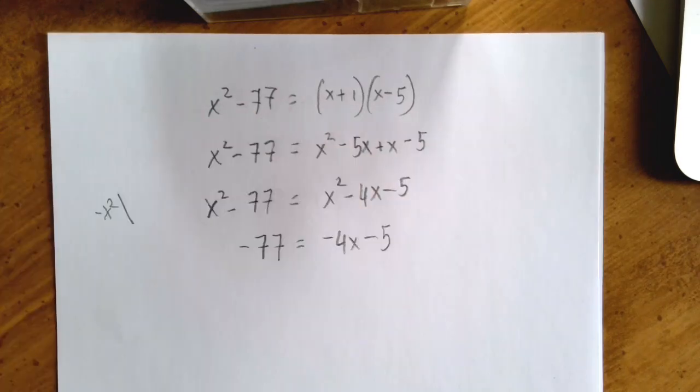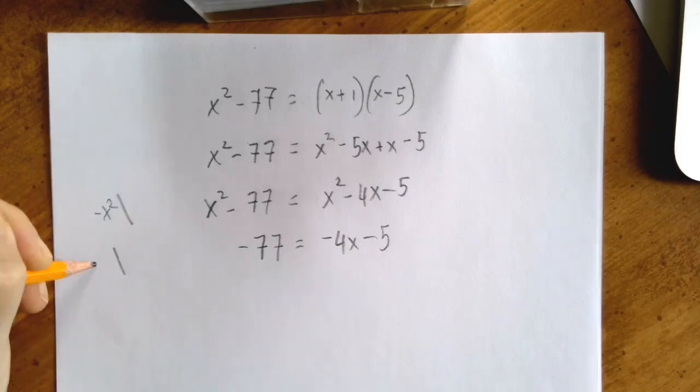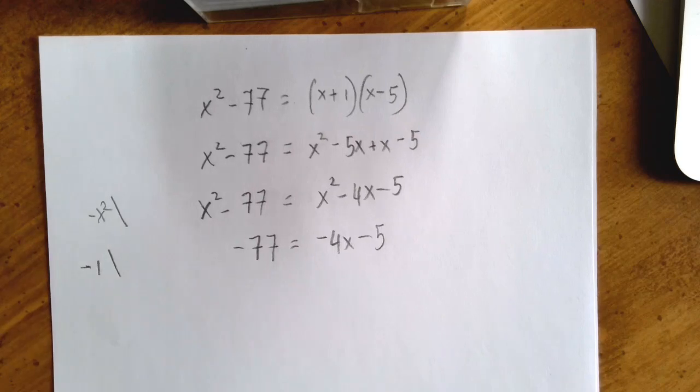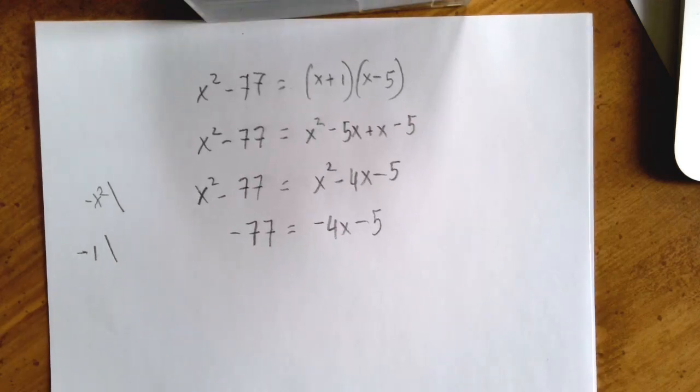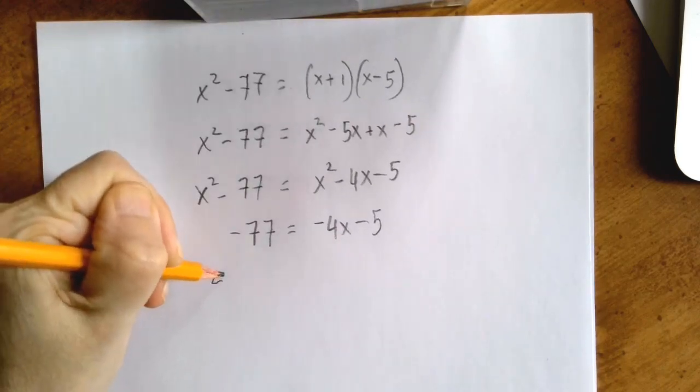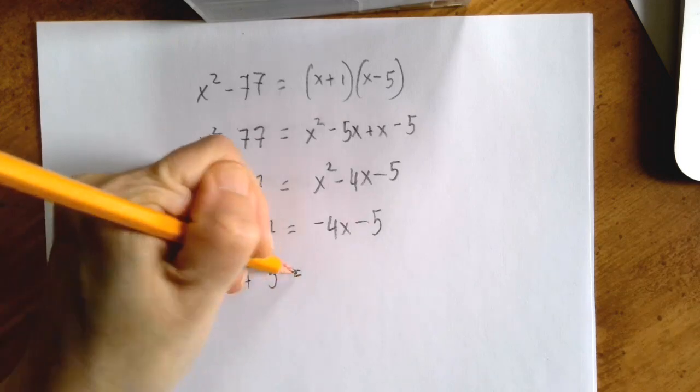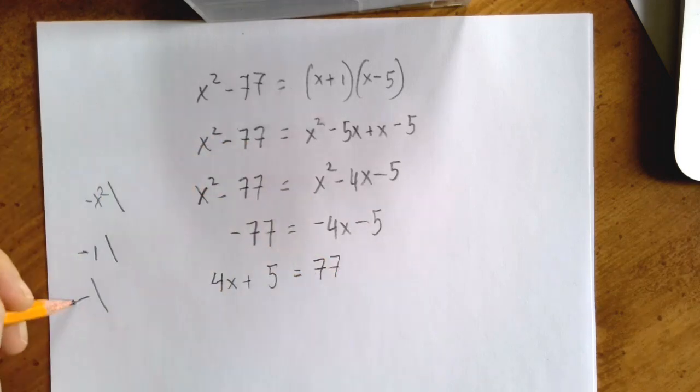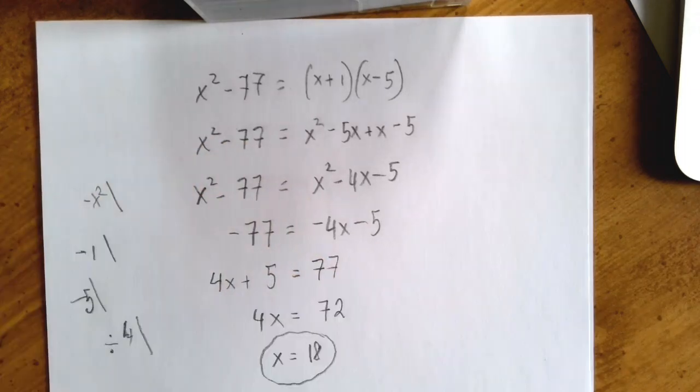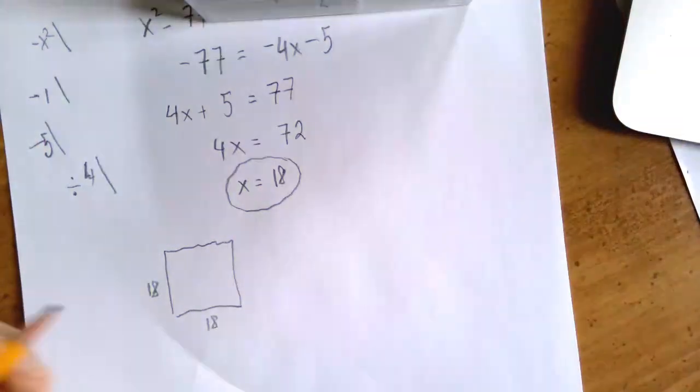At this point, I feel like multiplying by negative 1 because every single coefficient is negative. So we're going to multiply both sides by negative 1. Worse yet, I'm going to swap the two sides. We'll be fine. Then this is 4x plus 5, and this is 77, a little better. And now we're going to solve for x. So if x is 18,